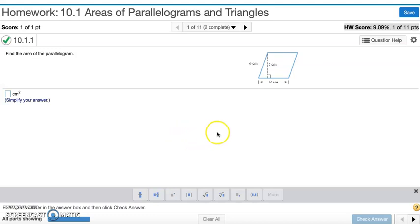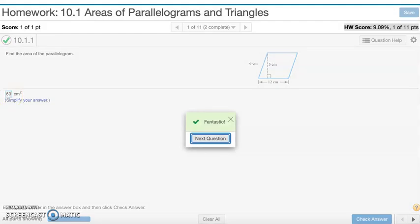Well, the formula for a parallelogram is base times the height, so that's 5 times 12, which is 60. And that's number 1.